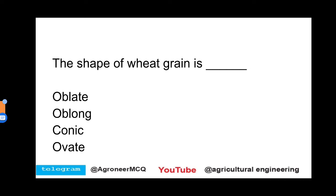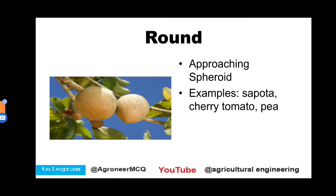Before going for this lecture, I would like to ask you one question: the shape of wheat grain. There are four options - oblate, oblong, conic, or ovate. When the shape is said to be round, it is approaching towards a spheroid. Examples of round shape are sapota, cherry, tomato, and pea.